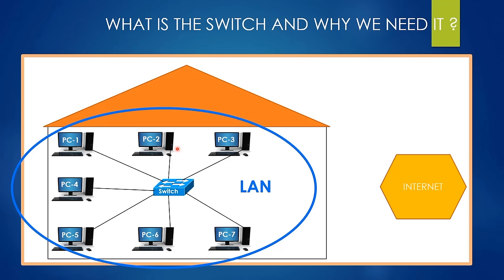Therefore, these computers can communicate with each other because all of them are on the same LAN with the help of this switch. We can deduce that if you want to create a LAN, we need a switch device. By using a switch device, we can create a local area network. If we consider the millions of local area networks all over the world, we can understand how important a switch device is — your house, your neighbor's home, and your office all have their own LAN.